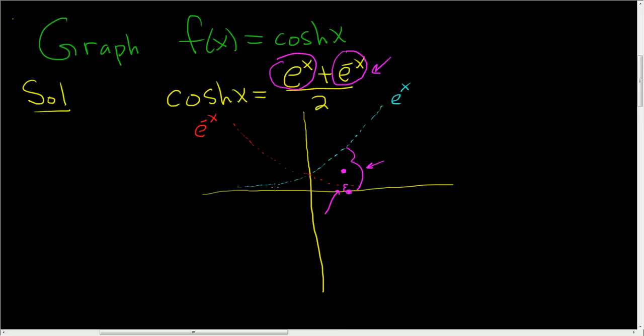Again, if you pick, say, this x value here, and you measure this y value and this y value, and you add them up and divide by 2, maybe you get a y value that's here. That's the hyperbolic cosine.